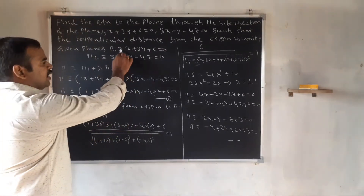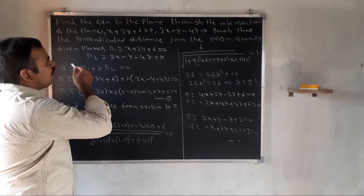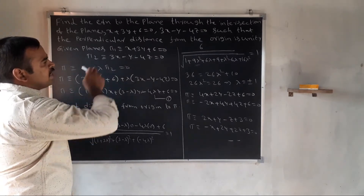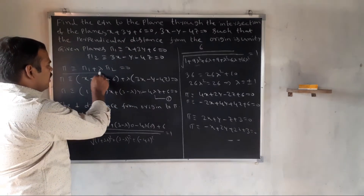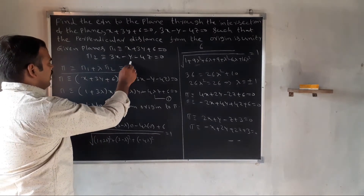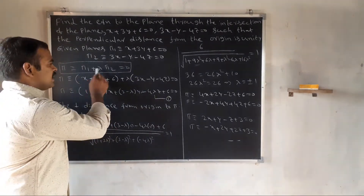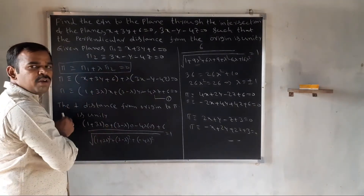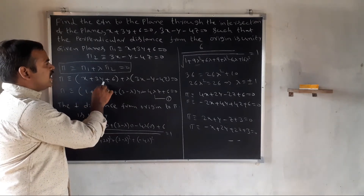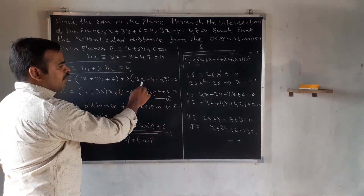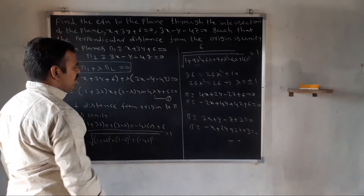Given planes P1 and P2. The equation of the plane through the intersection of the planes is P1 plus lambda into P2 equal to 0. So, x plus 3y plus 6 plus lambda into 3x minus y minus 4z equal to 0.